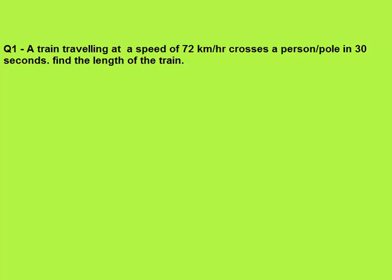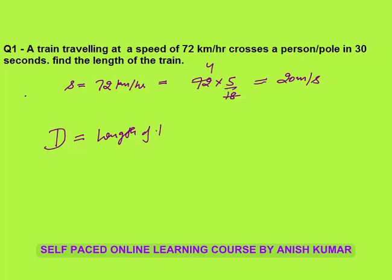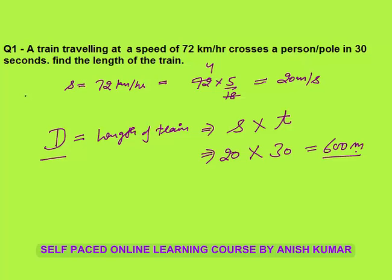The first question: a train travelling at a speed of 72 km per hour. I will convert it into meters per second — 72 × (5/18) = 20 meters per second. The train crosses a pole in 30 seconds; what is the length of the train? We know that whenever a train crosses a pole, the distance travelled equals the length of the train. Distance = speed × time = 20 × 30 = 600 meters. So 600 meters is the length of the train.